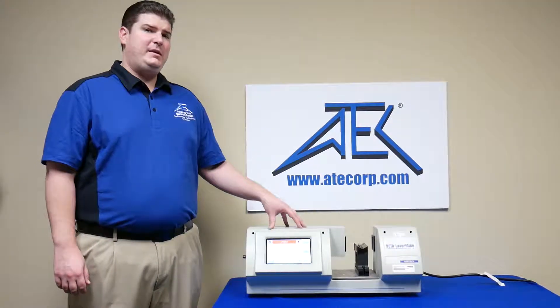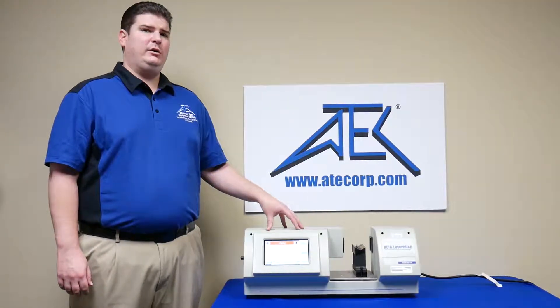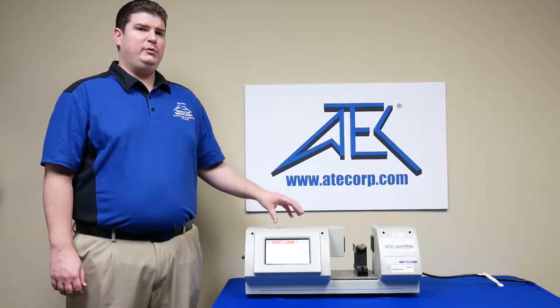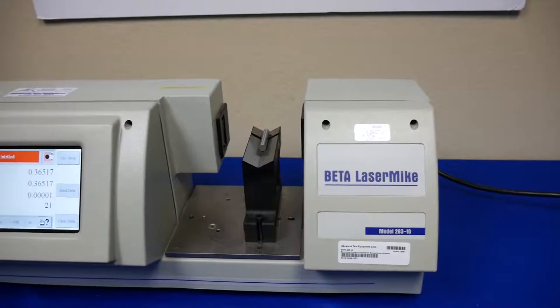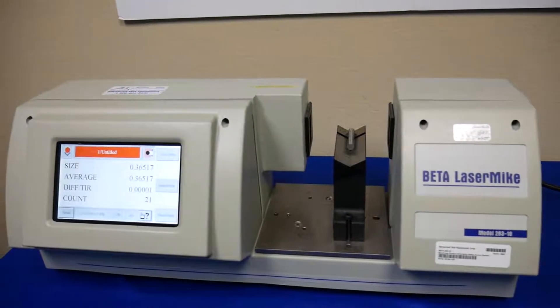So what we're going to do is adjust the speed of the output to make it slower so that every single time it gives you a data point, it takes longer to give you a data point, but you get more averages, therefore you're more accurate.